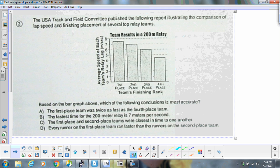Alright, for problem number two, this is a track and field committee published the following report. It was during the comparison of lap speed and finishing placement. Based on the bar graph, which of the following conclusions is most accurate? The first place team was twice as fast as a fourth place team.